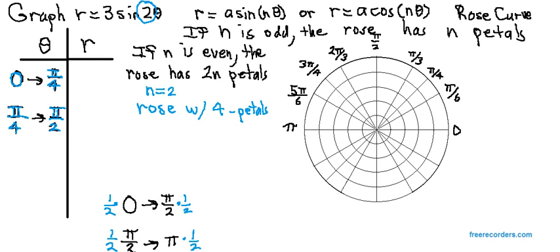So, let's go back to the first row and plug in 0 for theta. 2 times 0 is 0. The sine of 0 is 0, and 3 times 0 is 0. So, when theta is 0, r is 0, which gives us the pole.